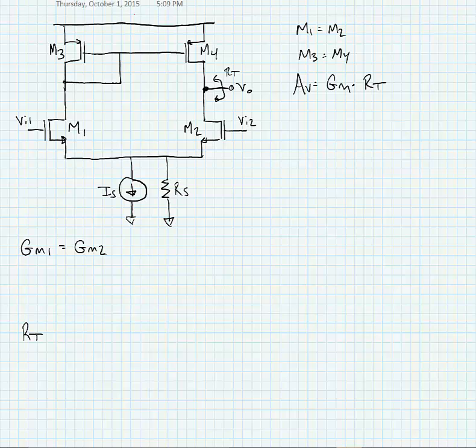First we'll begin by finding big GM. Now we know that big GM1 is equal to big GM2, and so really all we have to do is find one of the GMs, and so we're going to look at GM1.